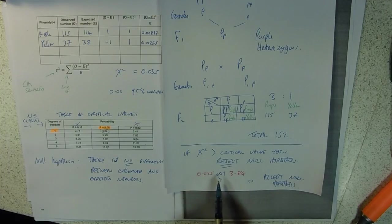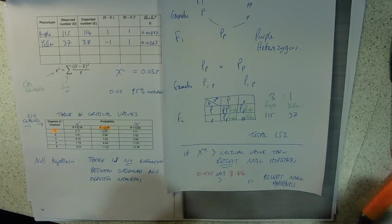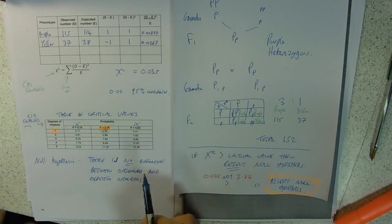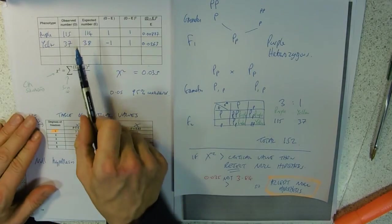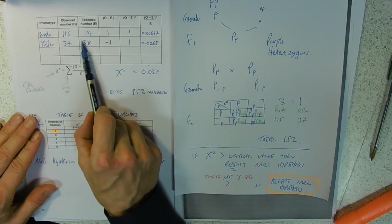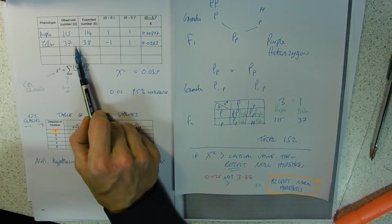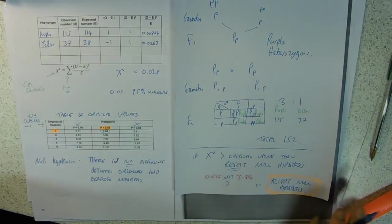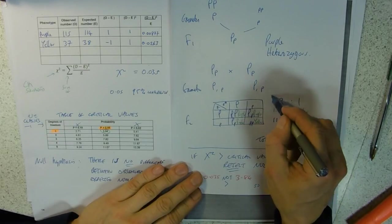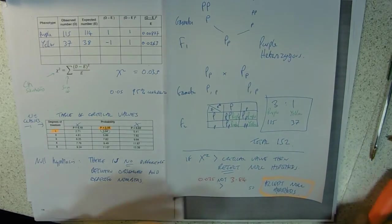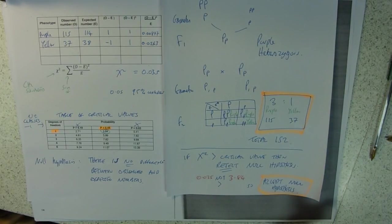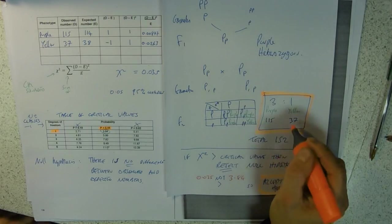Our chi-squared is not greater than 3.84, our critical value, so we accept our null hypothesis. We accept that there is no difference between the observed and the expected. Any difference is due to chance. Really we can say yes, our numbers do fit into that ratio. There is a three to one ratio between our corn cobs, which is probably what we thought all along.